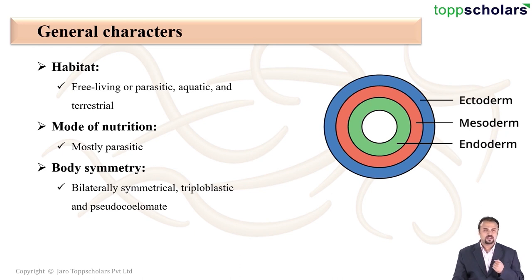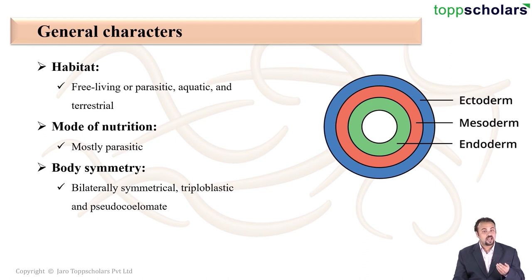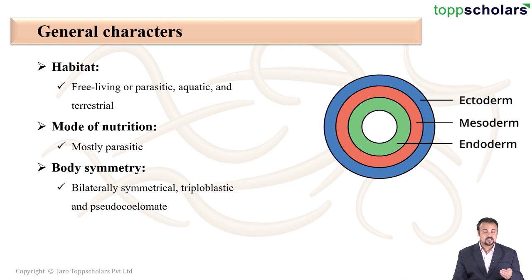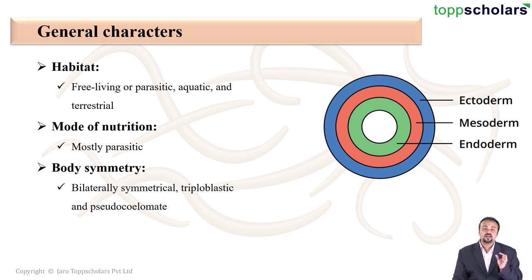The body symmetry is bilateral, and as you can see, these are triploblastic animals. Look at the image above me — the body of these organisms has all three germ layers: the outermost ectoderm, the middle mesoderm, and the innermost endoderm.